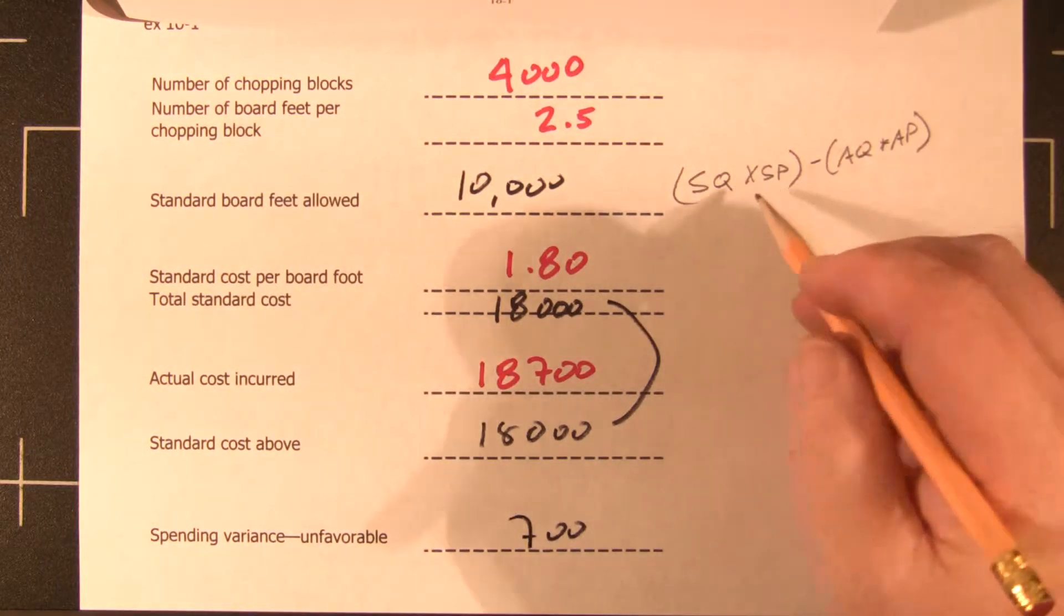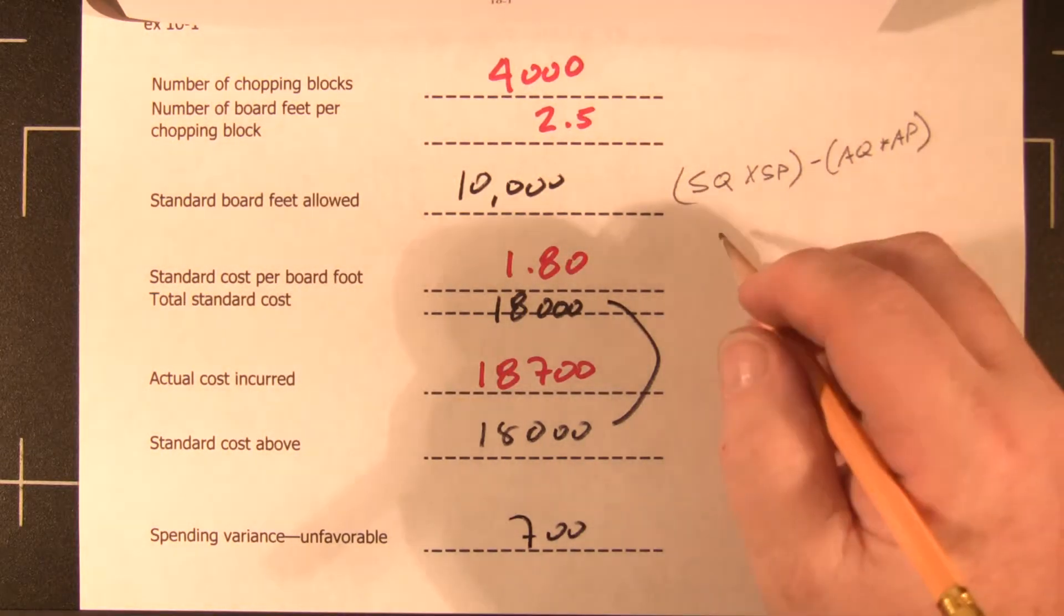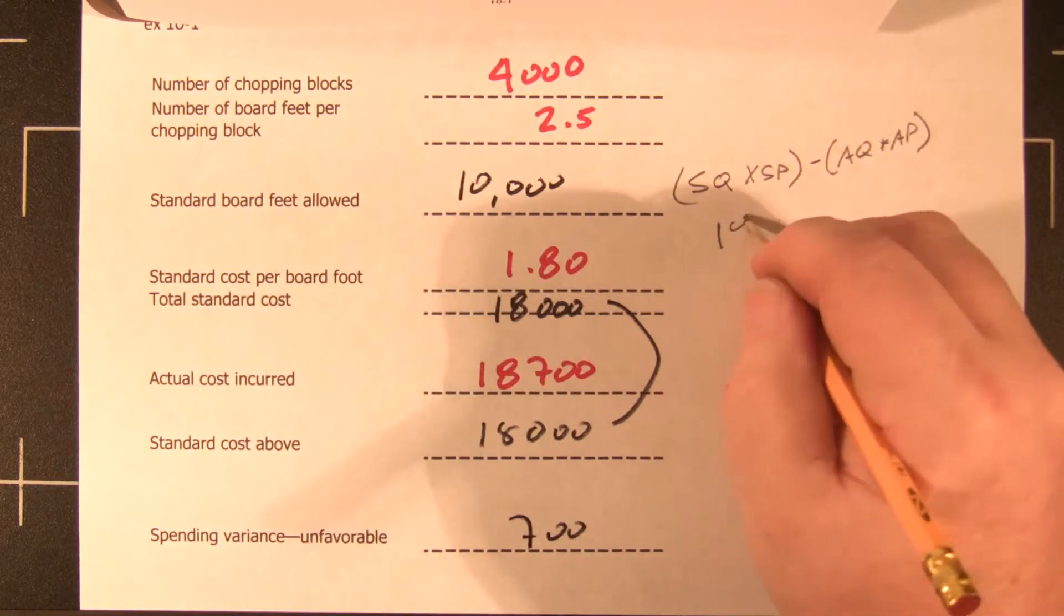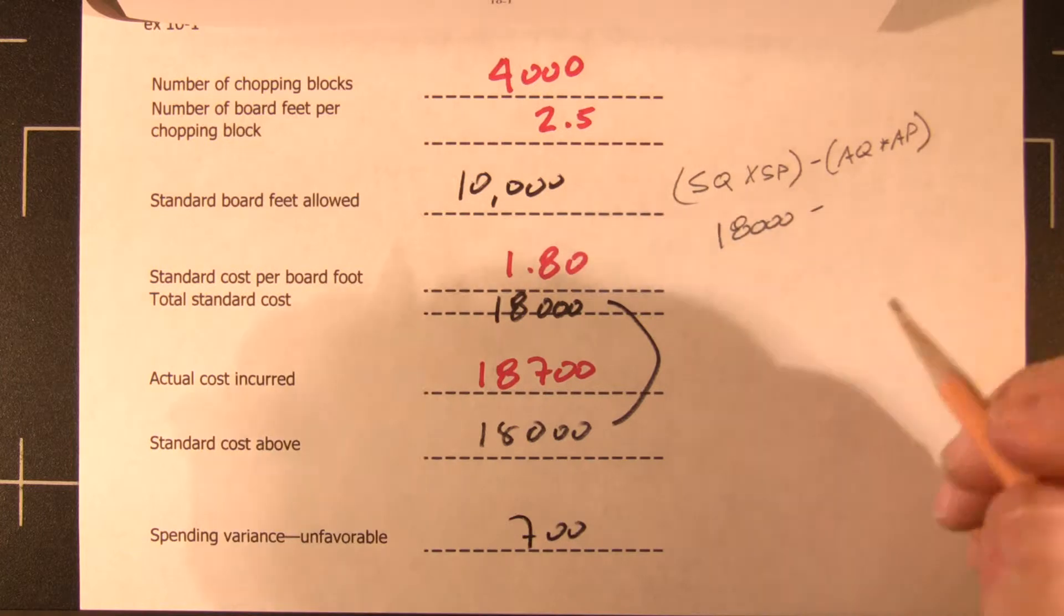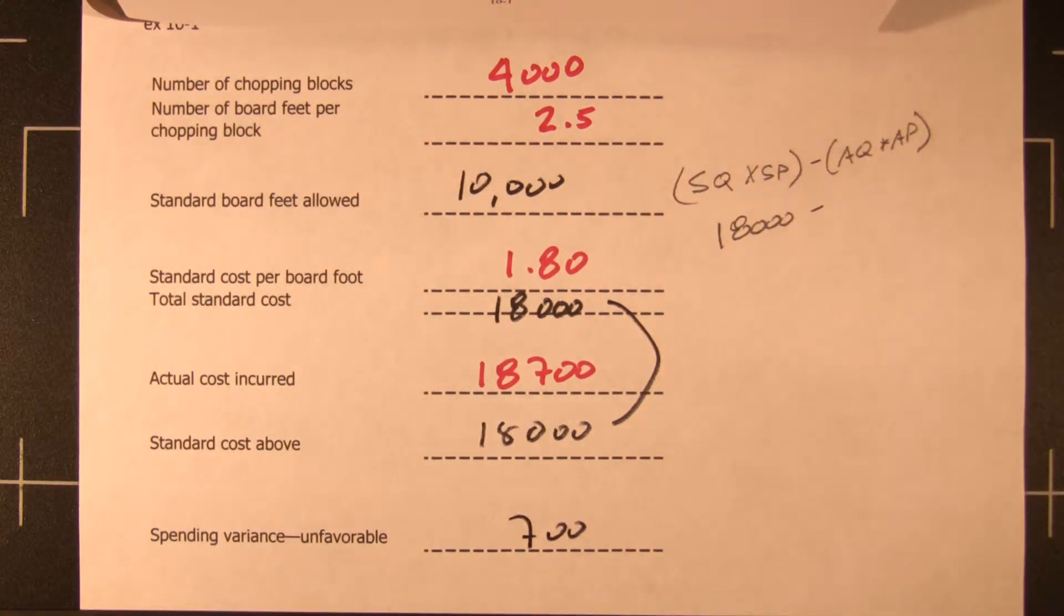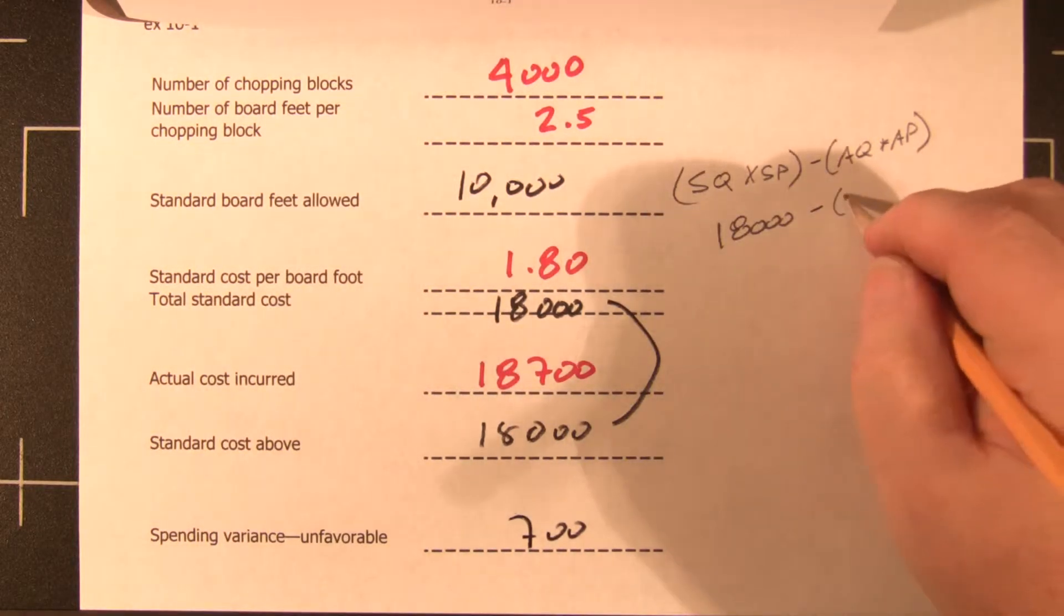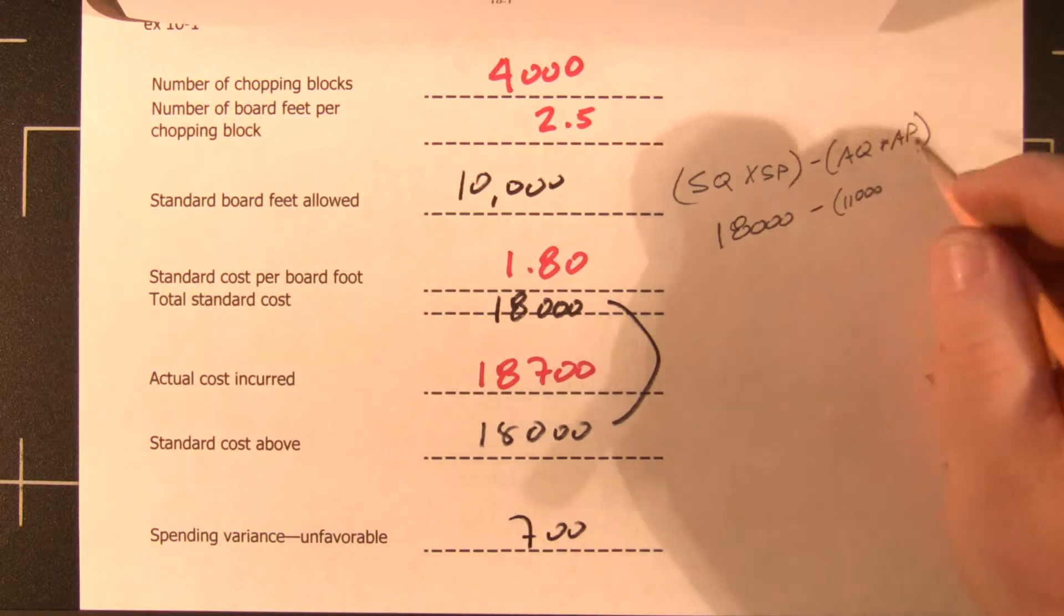So our standard quantity at standard price, that would be 18,000. And if we look at how many board feet we used, they told us that we had used a total of 11,000 board feet, so that was the actual quantity, and we multiply the actual quantity times the standard price.